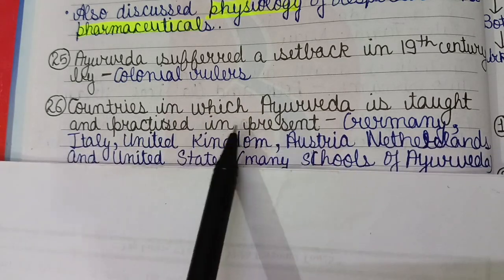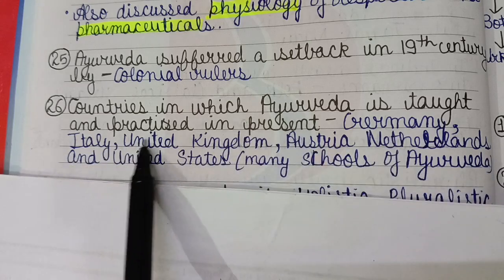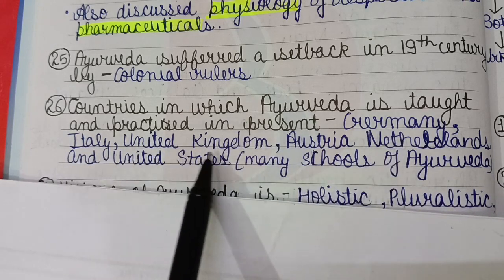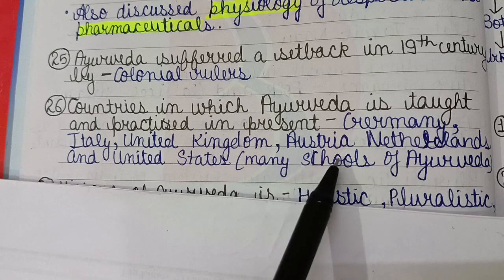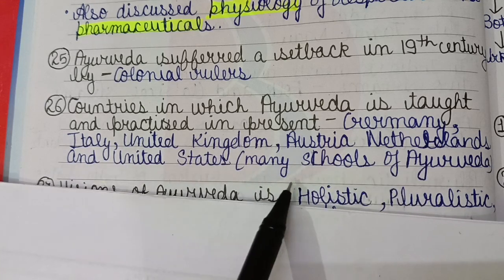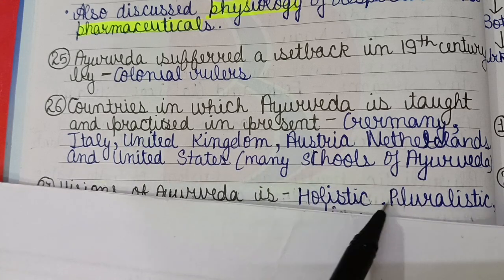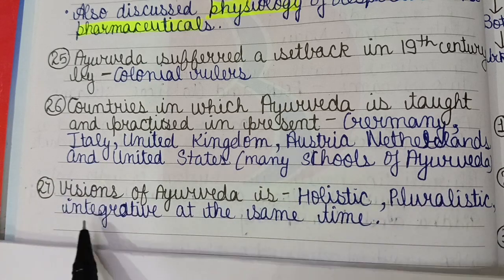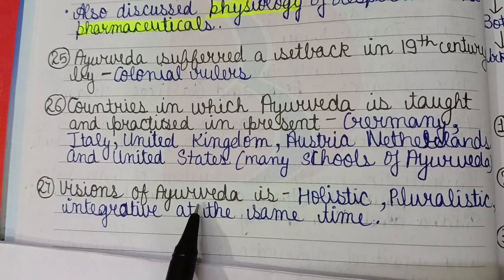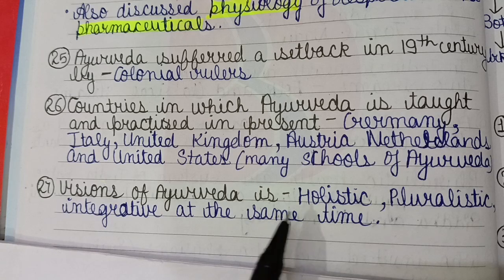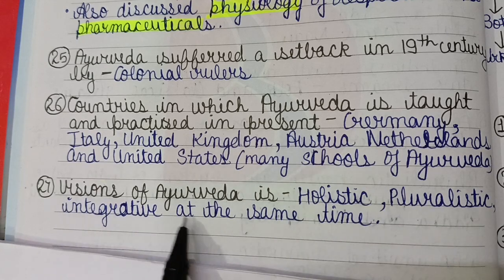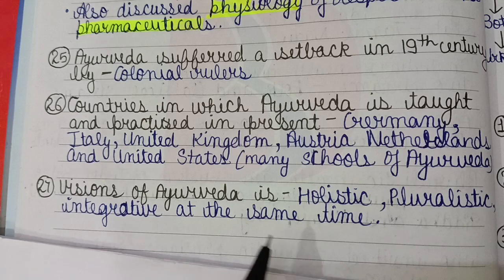Today Ayurveda is taught and practiced in countries including Germany, Italy, United Kingdom, Austria, Netherlands, and the United States, where many schools of Ayurveda are running. The vision of Ayurveda is its holistic, pluralistic, and integrative approach. Thank you.